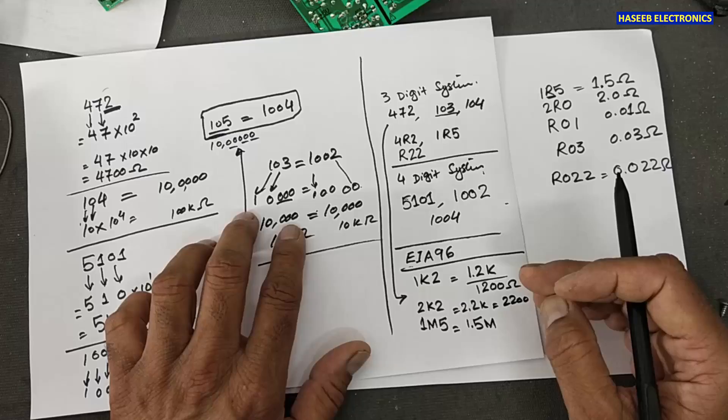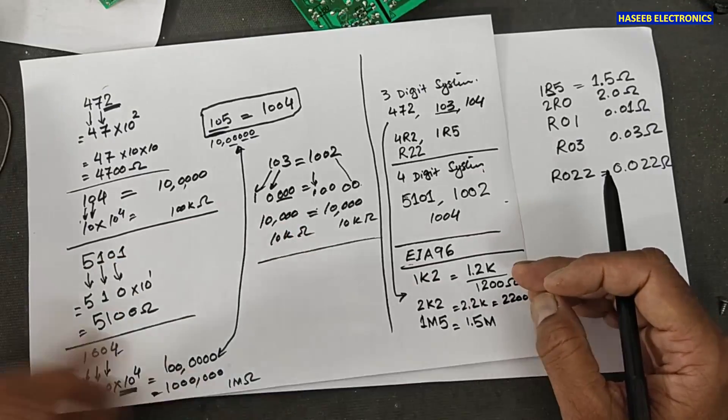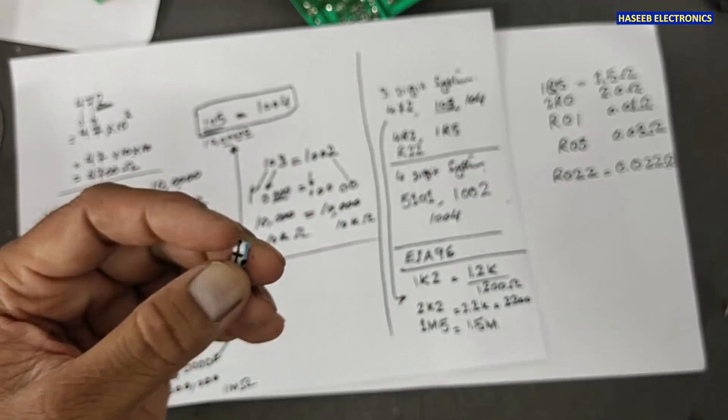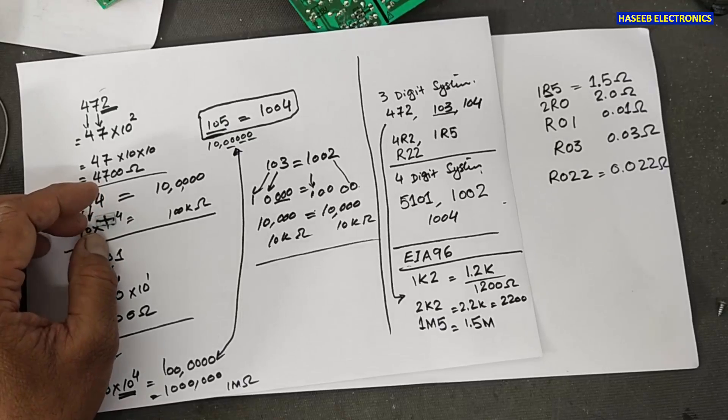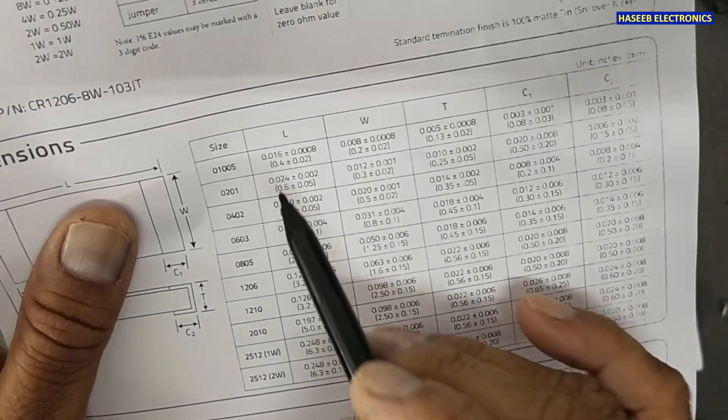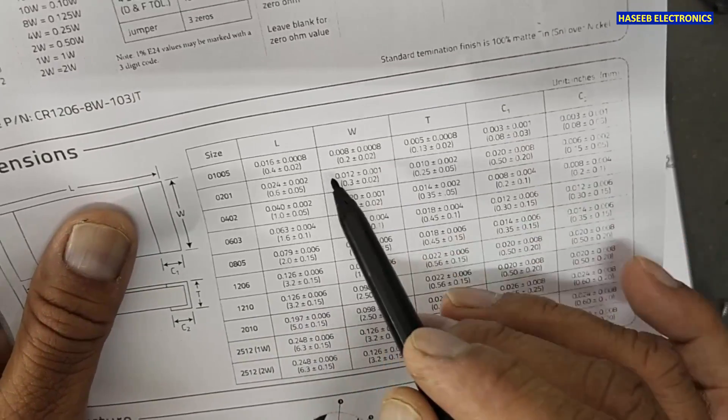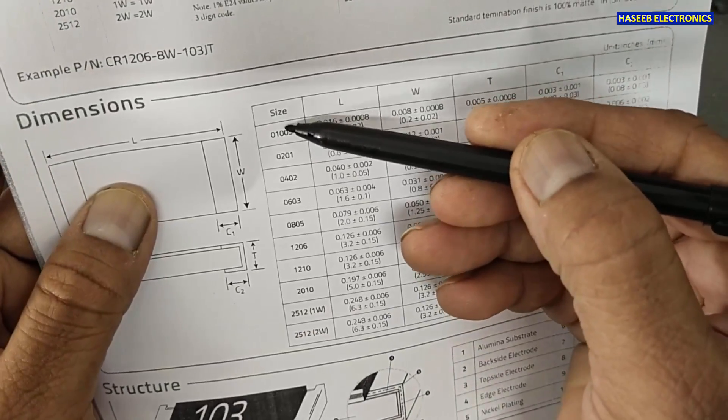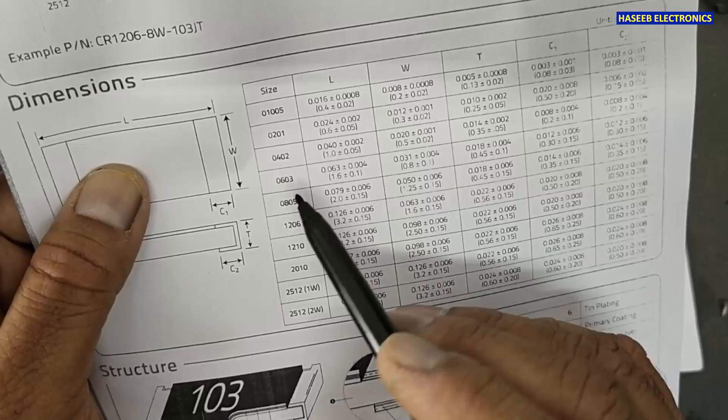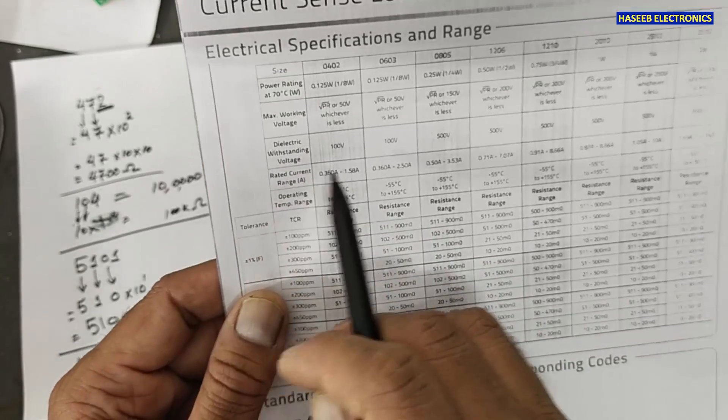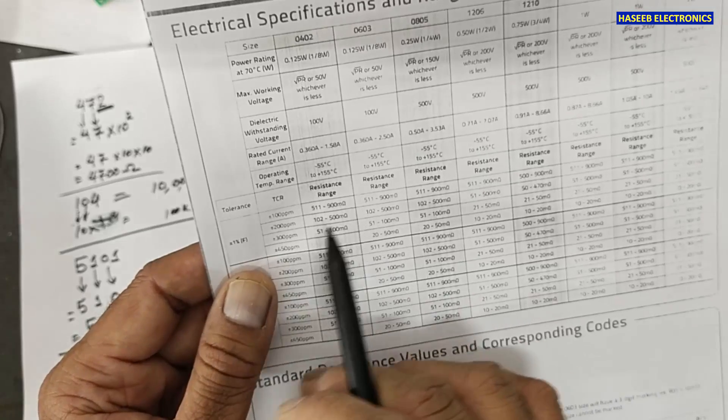To find the wattage value, we need to measure length, width and thickness or width or height. When we will find these three measurements, then we will go to the chart. Match the length, width and thickness in millimeters. And check the size code. With this size code, we will find the wattage, voltage rating, current, temperature, resistance range and percent tolerance. Every data we can locate here.